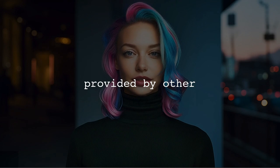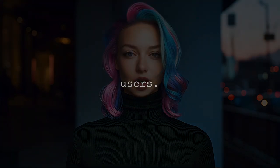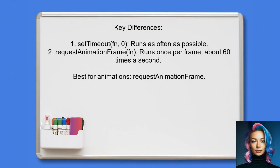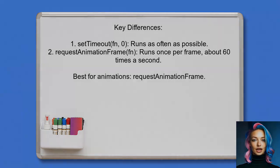Now let's look at the answers provided by other users. One user clarifies that setTimeout with zero delay and requestAnimationFrame are not the same. Using setTimeout allows a function to run as often as possible, while requestAnimationFrame limits calls to once per frame, typically 60 times a second. This makes requestAnimationFrame more suitable for animations as it aligns updates with the display refresh rate.